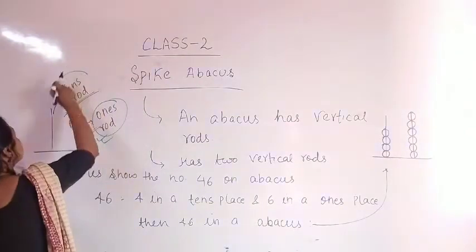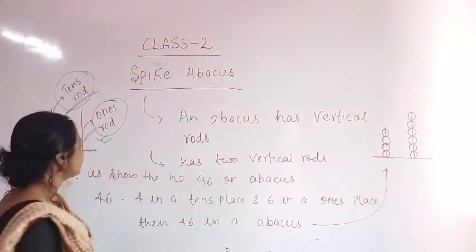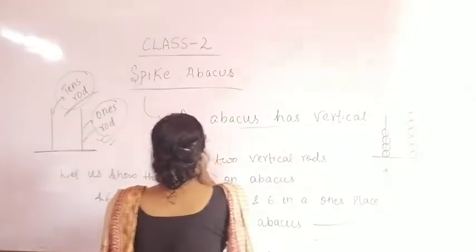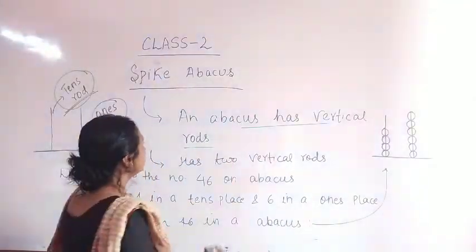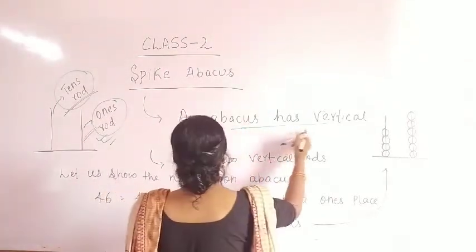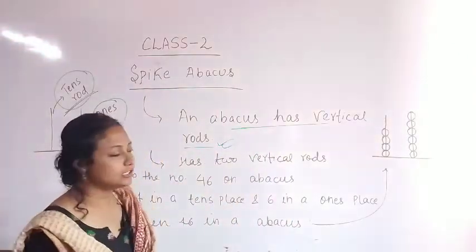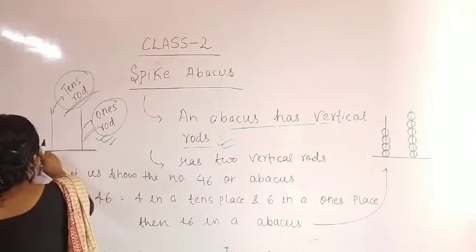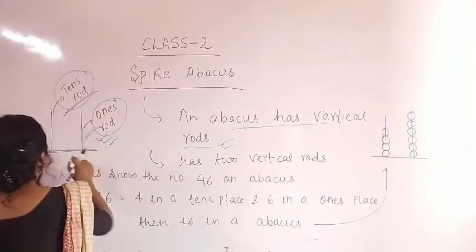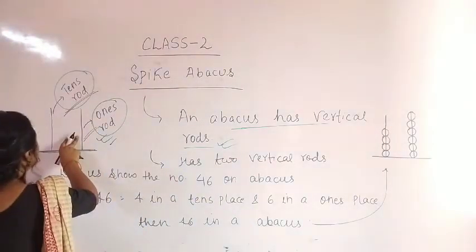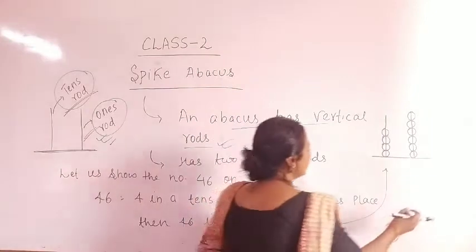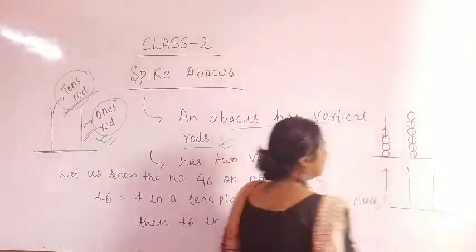One rod is in the one's place and the second is in the ten's place. The definition of an abacus: an abacus has vertical rods on a horizontal surface and two rods in a vertical arrangement. This is the spike abacus.